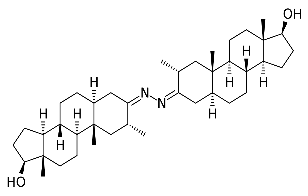Bolazine, also known as 2-alpha-methyl-5-alpha-andristan-17-beta-ol-3-1-azine, is a synthetic androgen anabolic steroid (AAS) of the dihydrotestosterone (DHT) group which was never marketed. It is not orally active and is used as the ester-prodrug bolazine capronate, brand name Roxelon inject, via depot intramuscular injection.